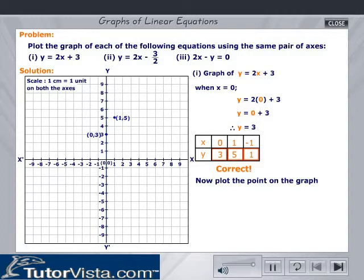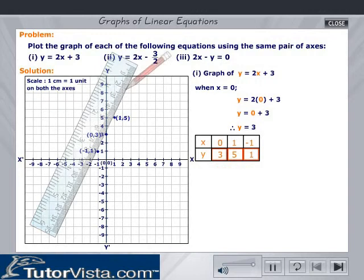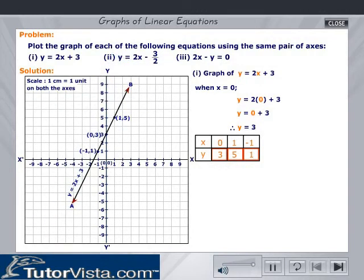Now, plot the point minus 1 comma 1 on the graph. Thus, we obtain the line AB, representing the equation y is equal to 2x plus 3.